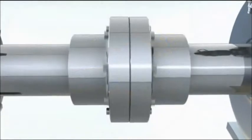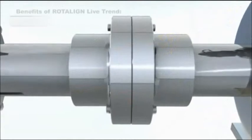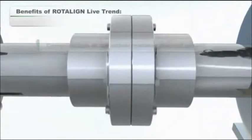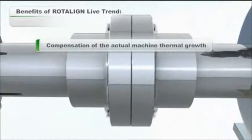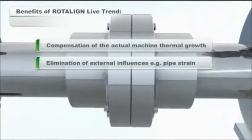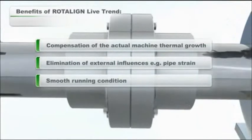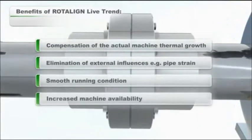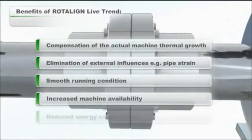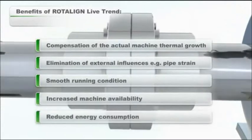The benefits of Rotoline Ultra Live Trend include compensation for the machine's actual thermal growth, elimination of effects of external influences such as pipe and coupling strain, smoother running machines by reducing vibration, increased machine uptime and availability, and reduced power consumption and energy costs.